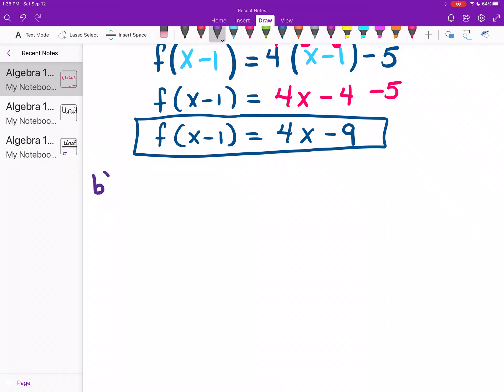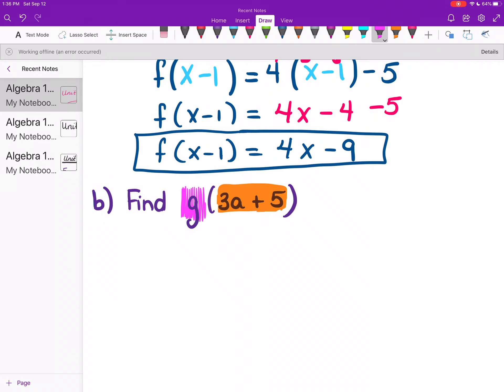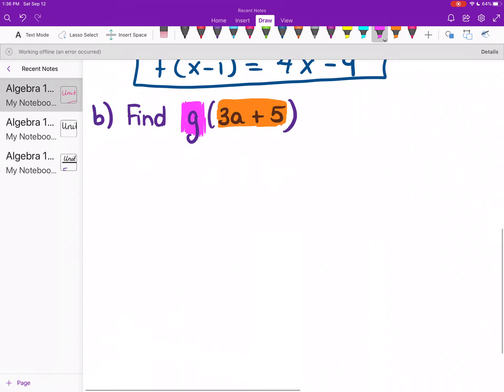So b says find g(3a+5). Okay? The g tells us which equation to use. And inside the parentheses tells us what we're going to replace our x with. Still following all the same rules that I've used before. I don't like the way I colored that g. Let me finish coloring it. Does that help? Eh, not much. Okay? So I'm going to rewrite the problem. g(x) equals, and what was g(x)? x plus 3.